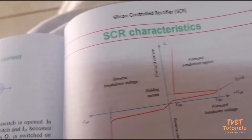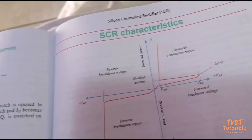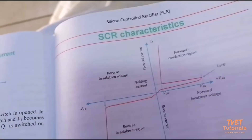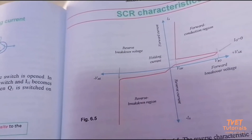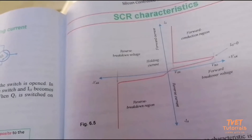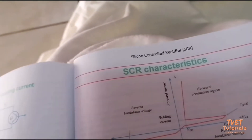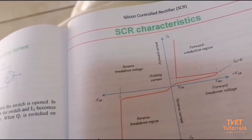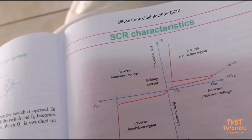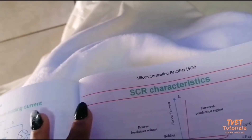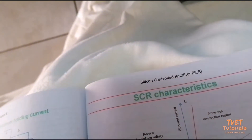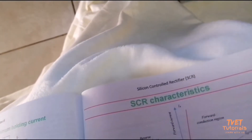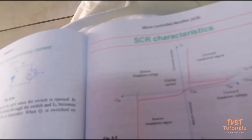SCR characteristics are the same as the characteristic curve of a diode. For a diode, current will conduct when forward biased and will not conduct when reverse biased. When it is reverse biased, only a small leakage current flows in the reverse direction. When reverse biased, J1 and J3 are forward biased and J2 is reverse biased, so the circuit will not conduct until you apply a positive to the gate.